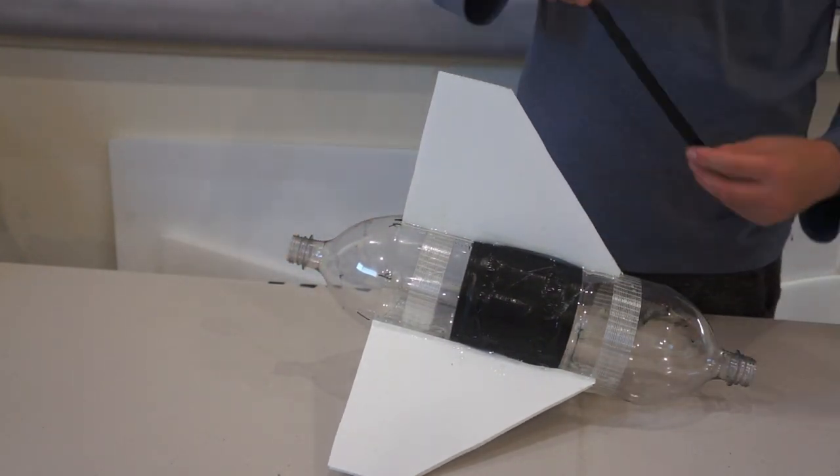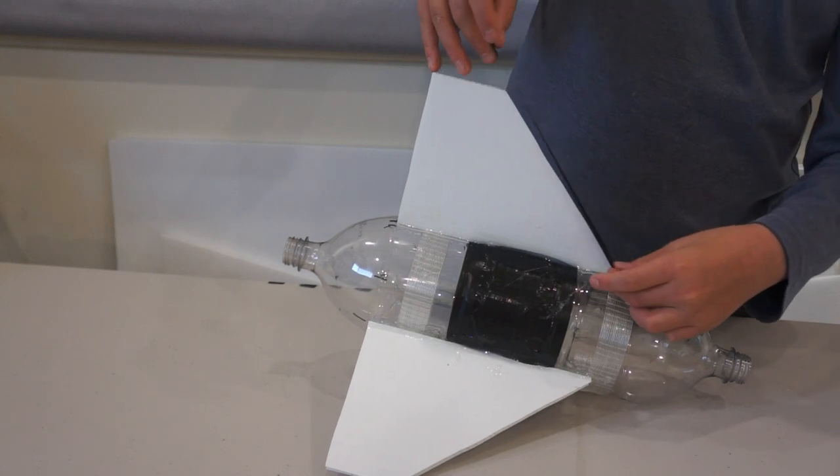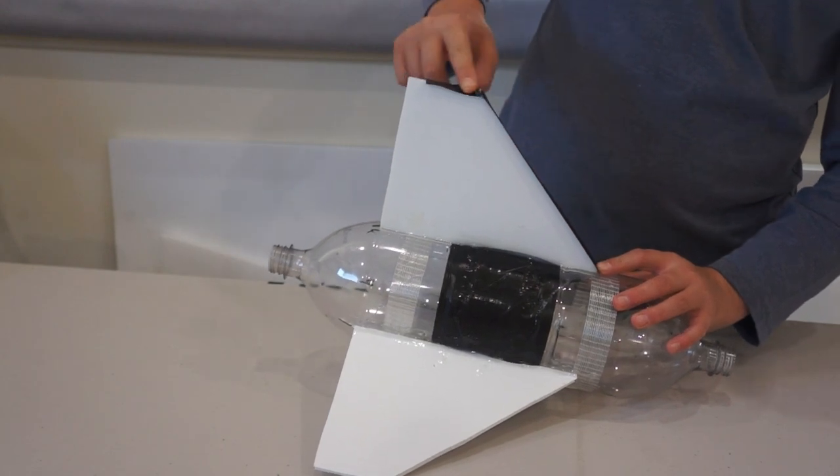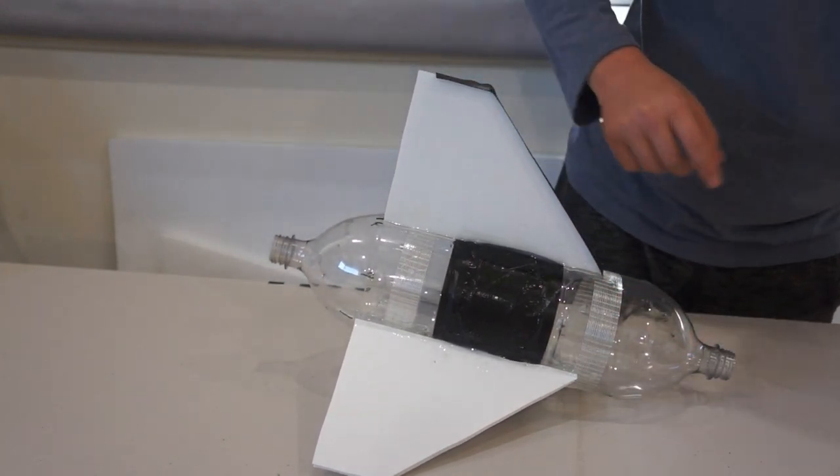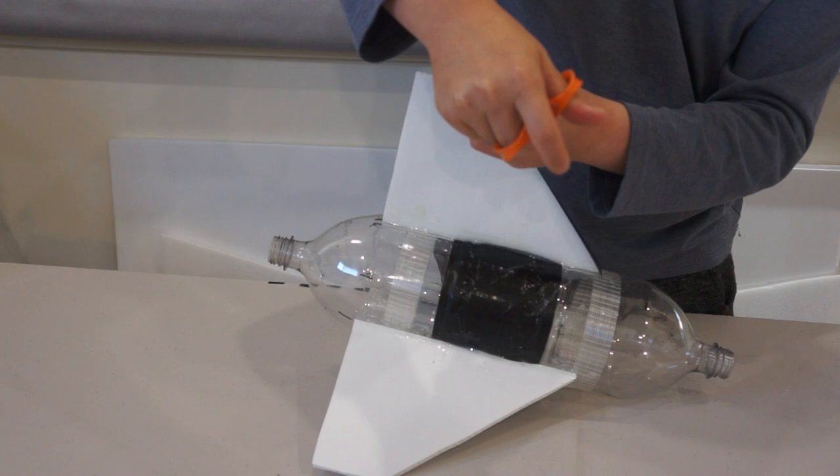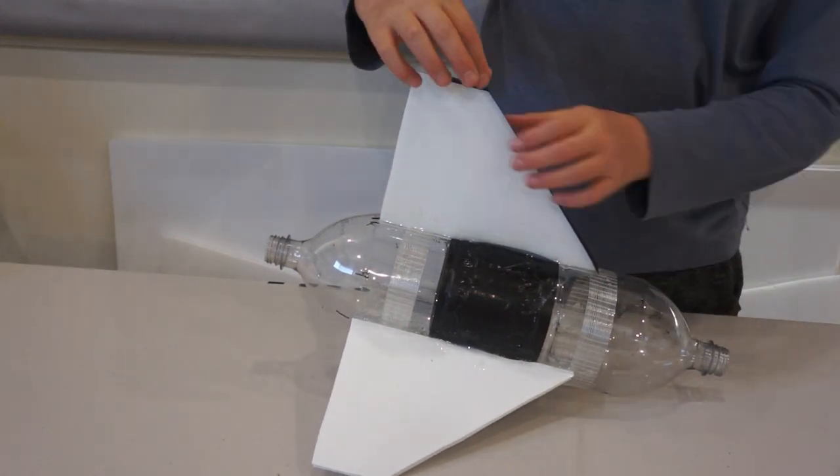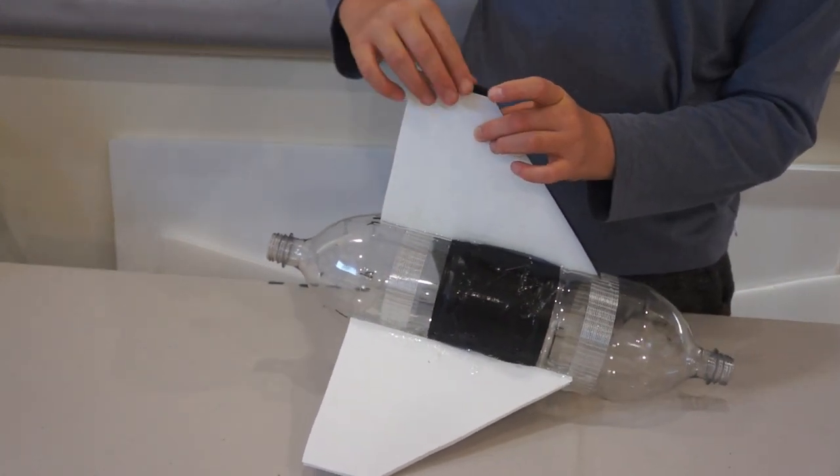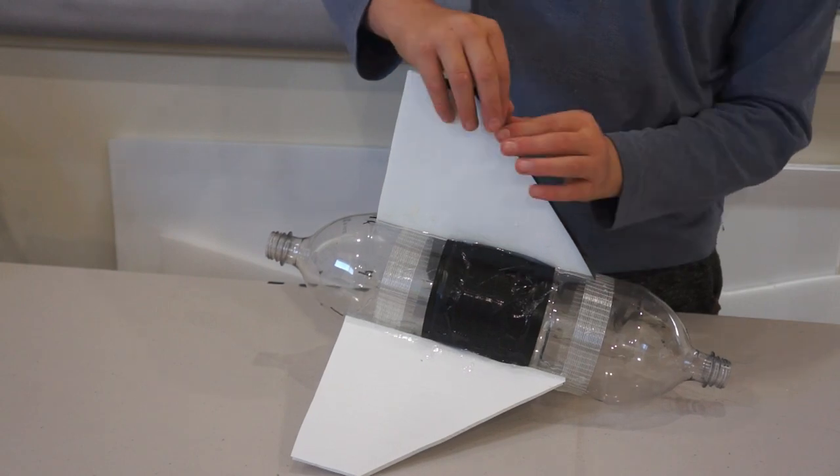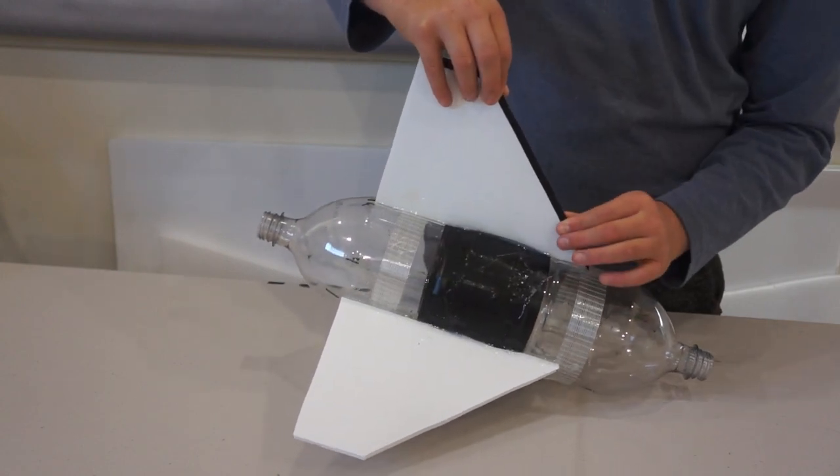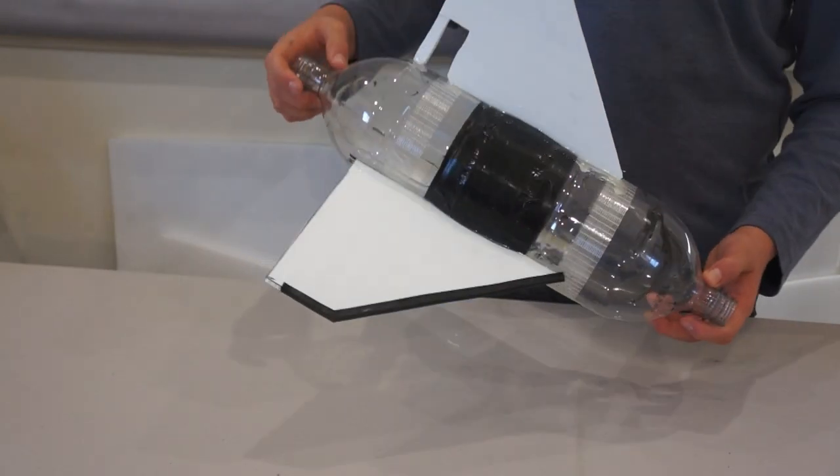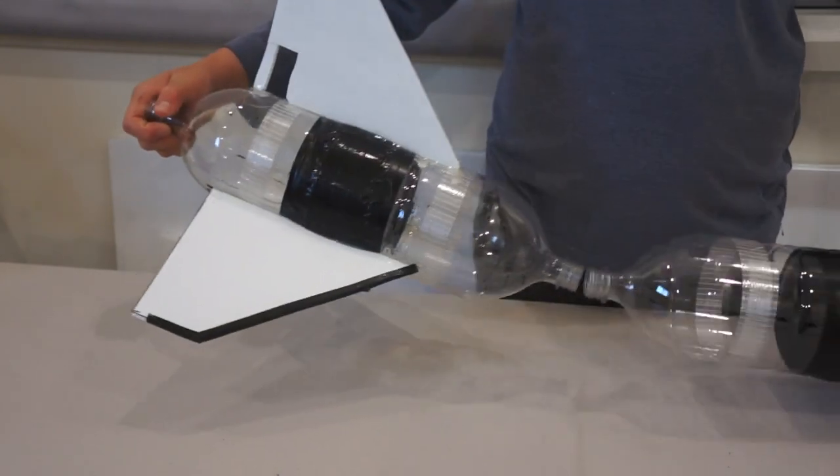And put it along the edge of the fin like this. Rub it on. Get some scissors and slit the two ends so it doesn't crinkle up. And then fold the tape over so it's a nice clean edge. Do it with the other two, and then we'll be joining the two bottles together.